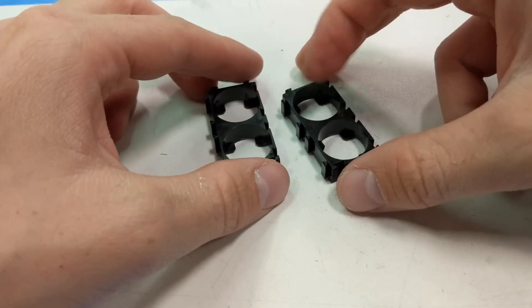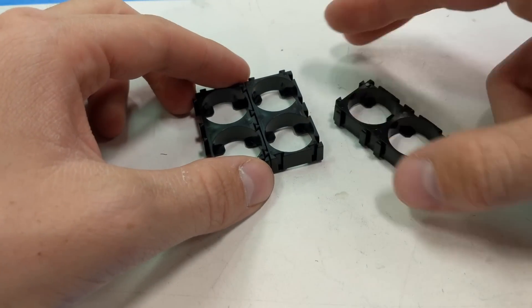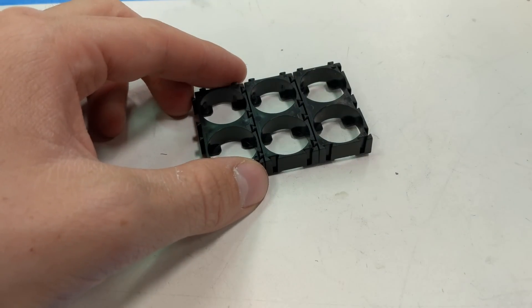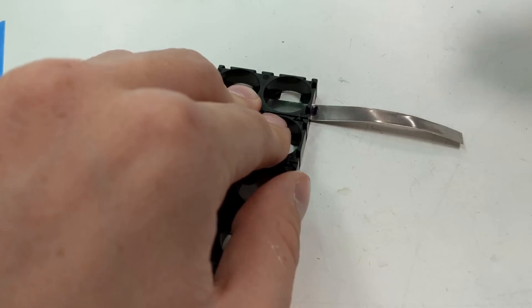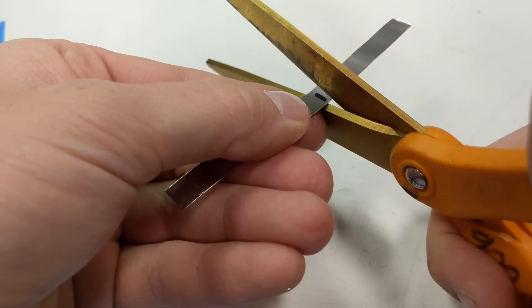First up is the plastic cell holders. You want to clip these together in the shape of your battery. Next, using the plastic clips as a guide, put the nickel strip down, mark it with a Sharpie, and cut it to length.